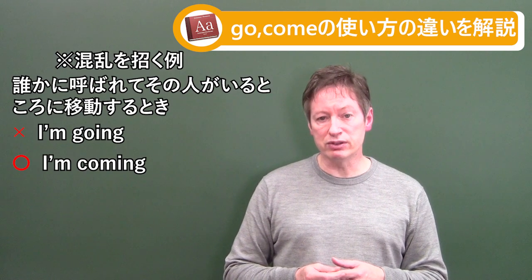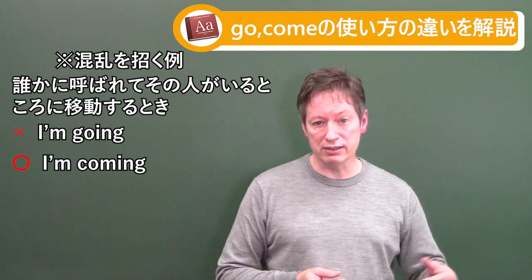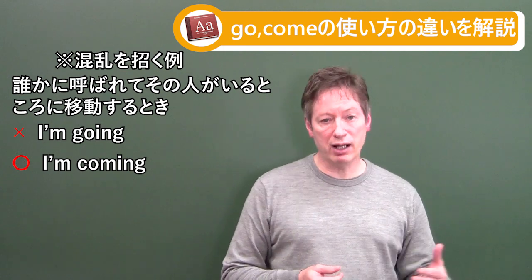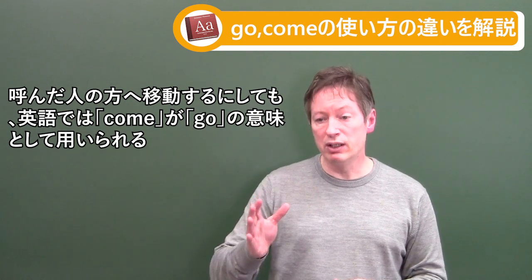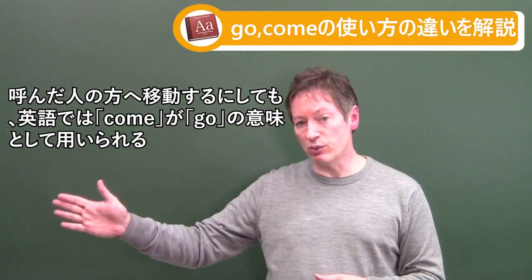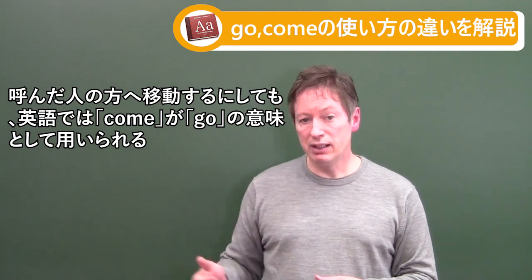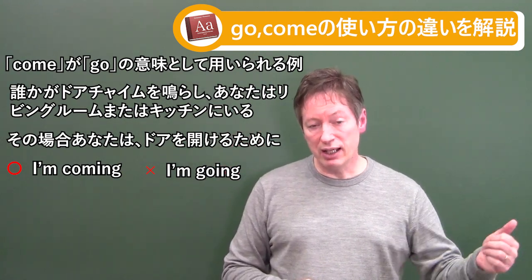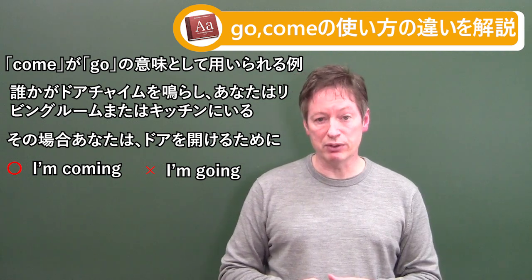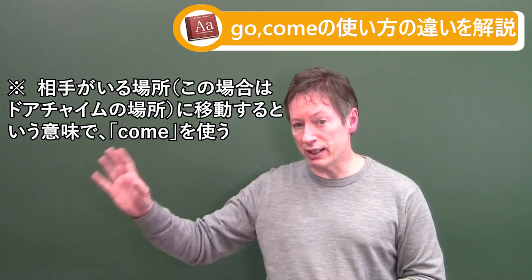Another thing that may be confusing: if somebody calls me and I move to where that person is, I won't say 'I'm going' — I'll say 'I'm coming.' So even though I'm moving in that direction, in English 'come' sometimes means going toward someone. What it means is: I'm coming to where you are — you called me, I'm going to your location. So if somebody rings your doorbell and you're in the living room or kitchen, you'll say 'I'm coming' to answer the door, not 'I'm going.'